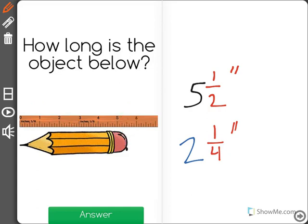If we look between the numbers two and three, the second line represents one-fourth of an inch, and the tall line in the middle represents one-half of an inch.